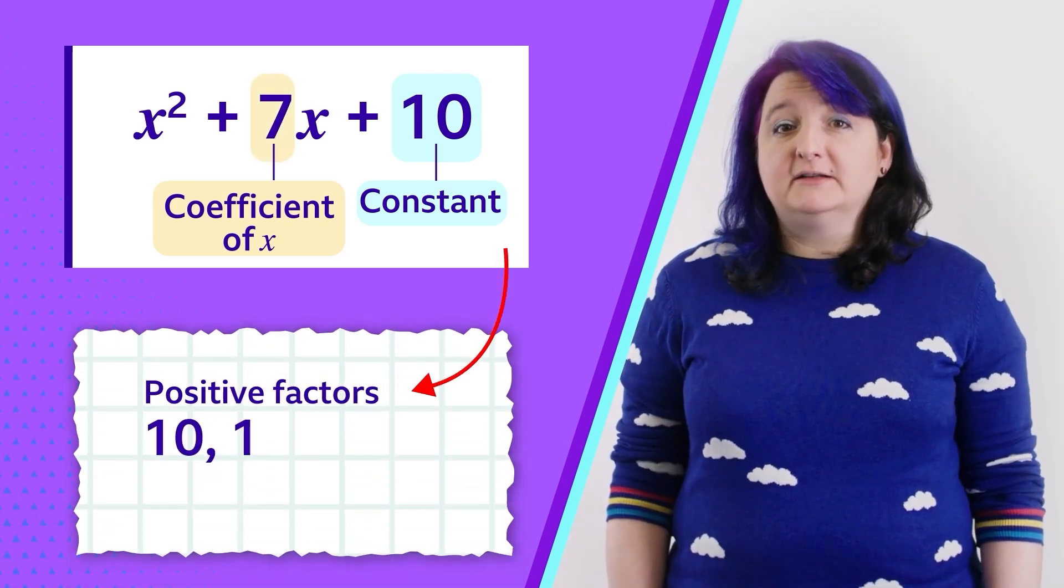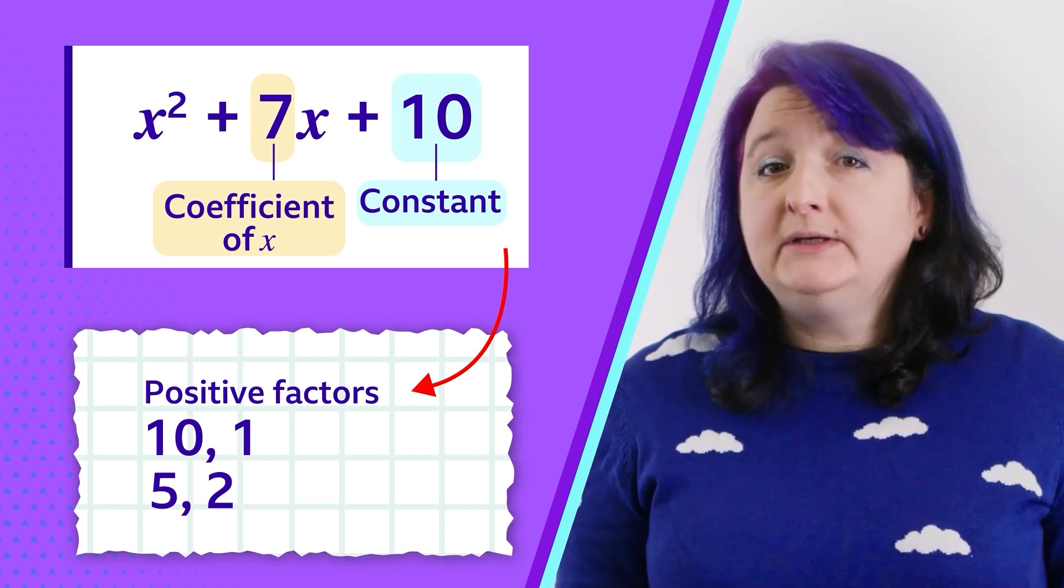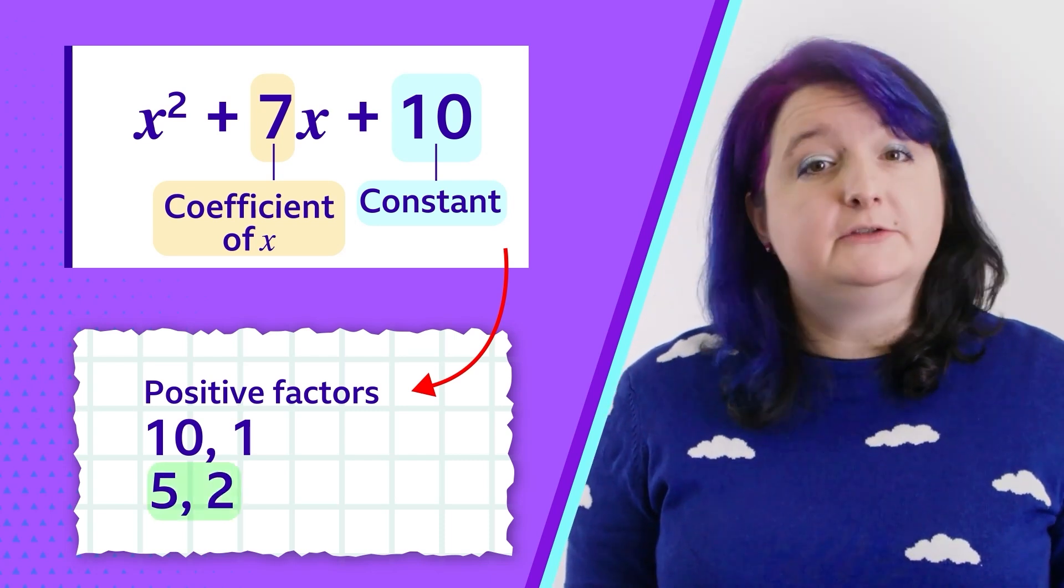The factors of 10 are 10 and 1 or 5 and 2. As you can see, only one of these pairs adds up to the x coefficient 7: 5 and 2.